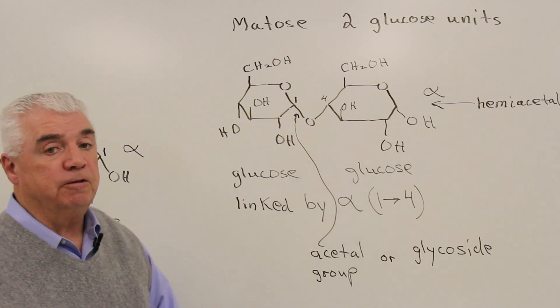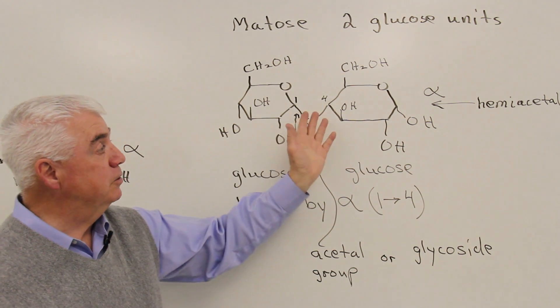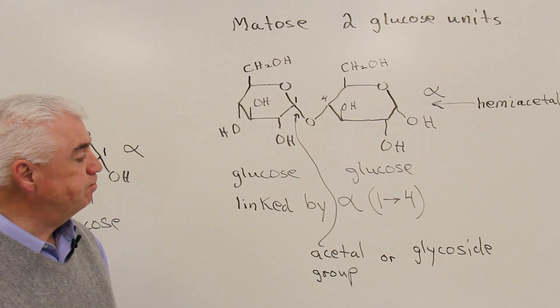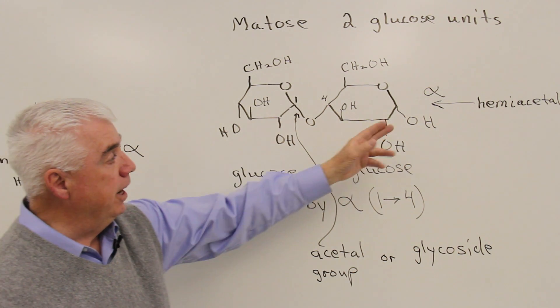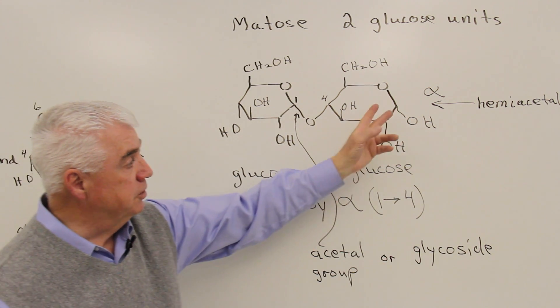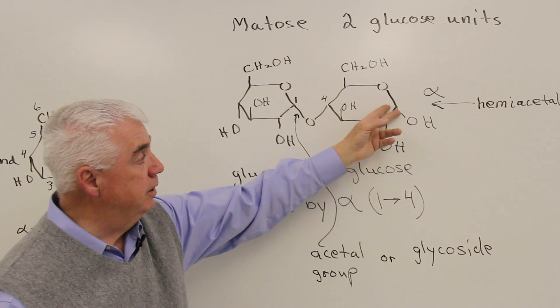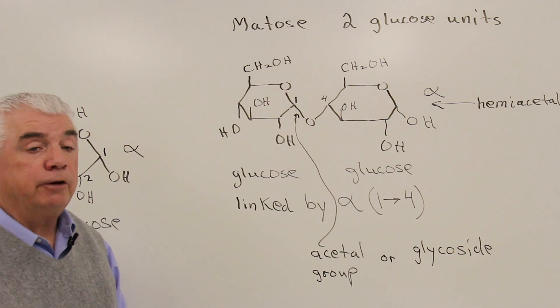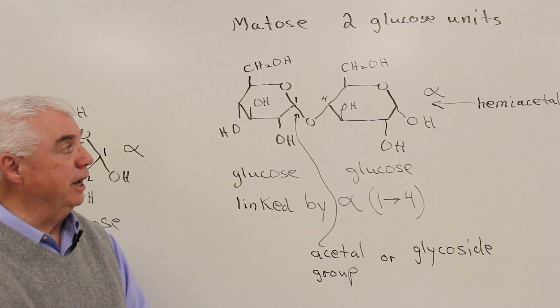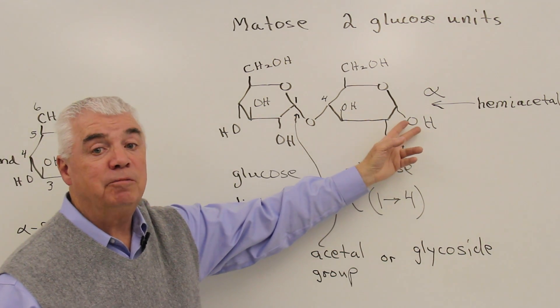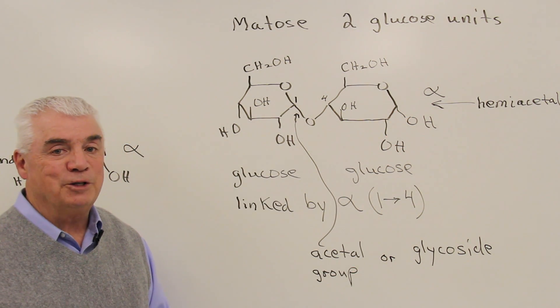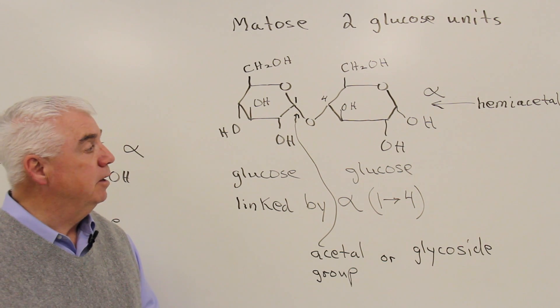We didn't have to specify the direction at position 4, because if we say it's glucose, then it has to be down at position 4. We've got a hemiacetal group over there on the right-hand side, because it's got an OH and an O attached to this carbon. There's a hydrogen that we haven't shown. That hemiacetal group is opening and closing. Here I've shown it in the alpha position, but the beta position would exist too. So really there are two forms of maltose, alpha and beta maltose.